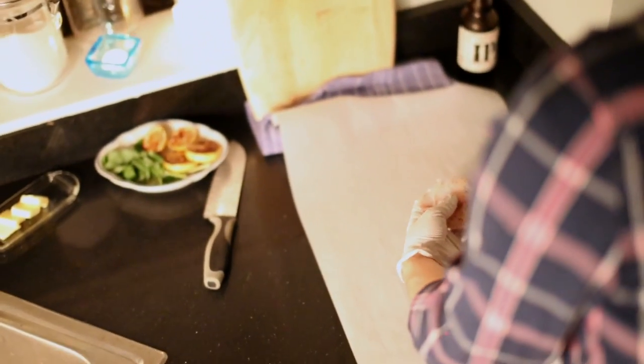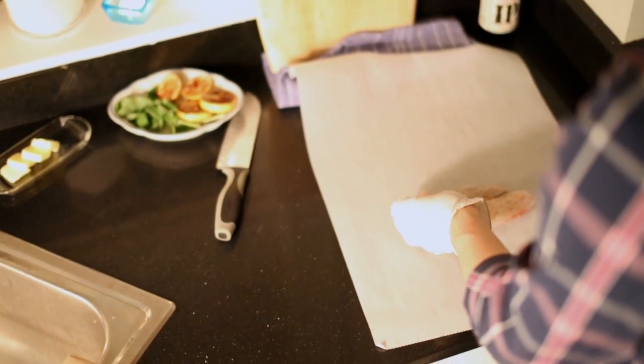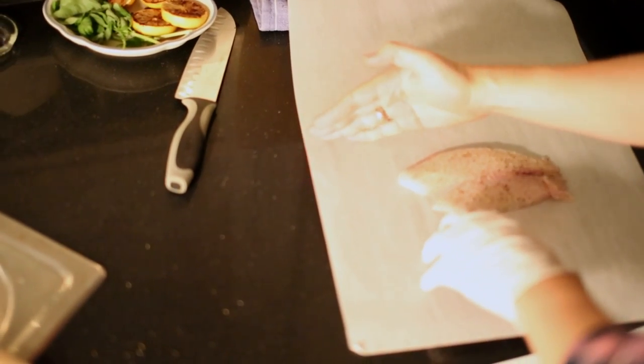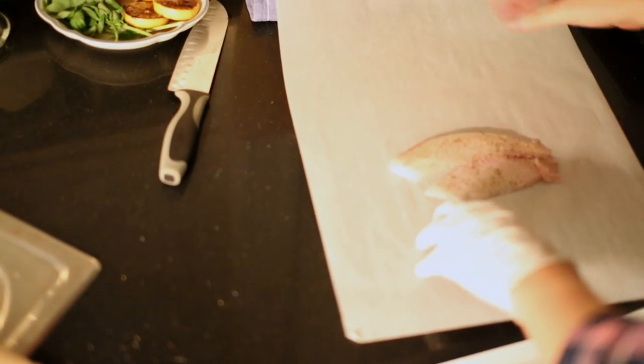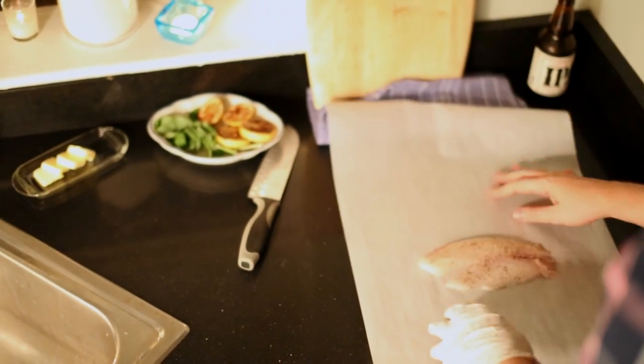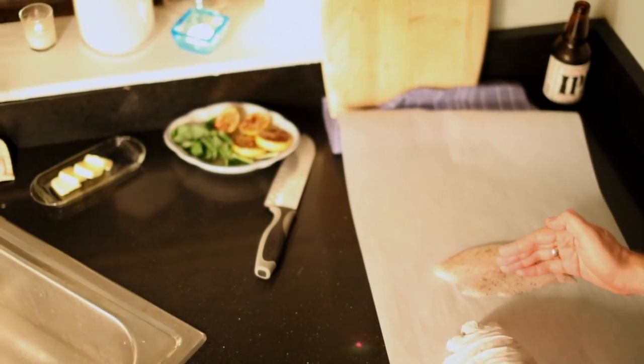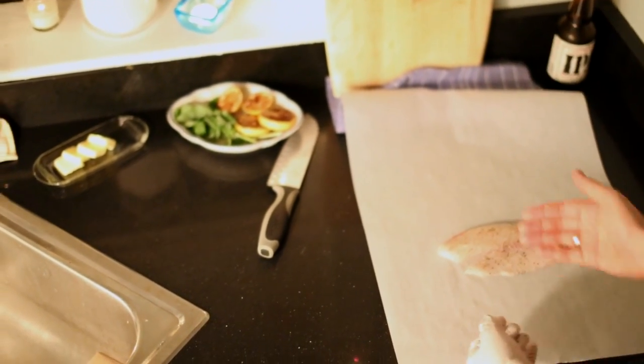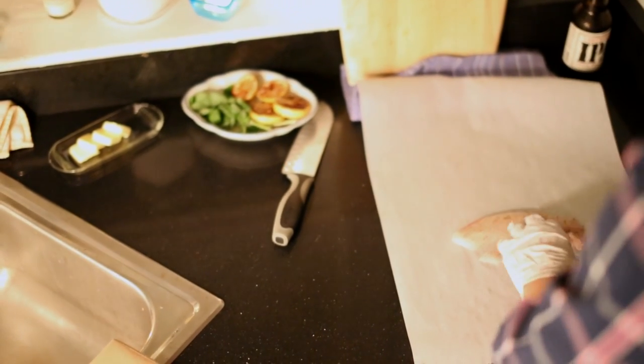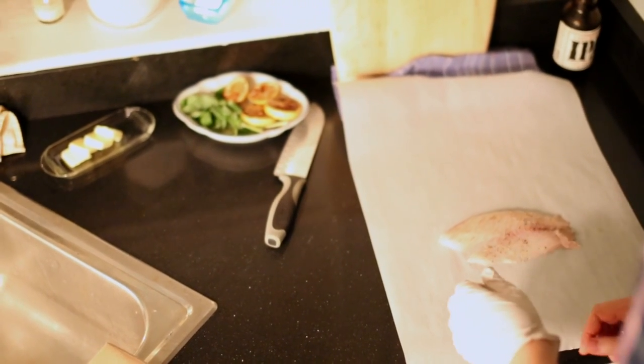So first, put our fish down, and when we put the fish down, we want kind of, if you can imagine the midpoint here. One way to find the midpoint is to fold it in half and put a crease in it, but we want a little bit in front of the midpoint so that when we fold it over and it has the stuff piled on top of it, it'll fold over evenly. So we put the fish in the center first, and then we want to layer some potatoes around it.